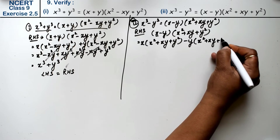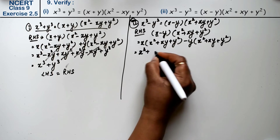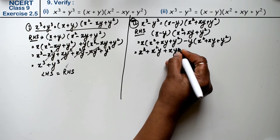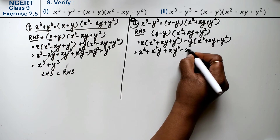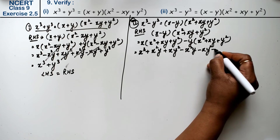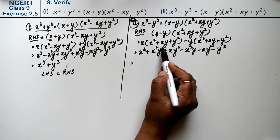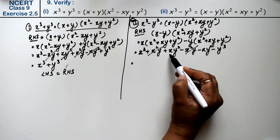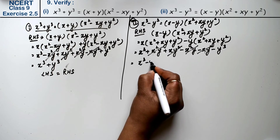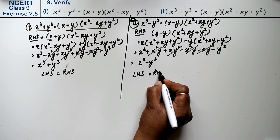So we get: x cube plus x square y plus x y square, minus x square y minus x y square plus y cube — applying sign changes. Now x²y — one plus, one minus — they cancel. xy² — one plus, one minus — they cancel. So what remains is x cube minus y cube. That means left-hand side equals right-hand side, hence verified.